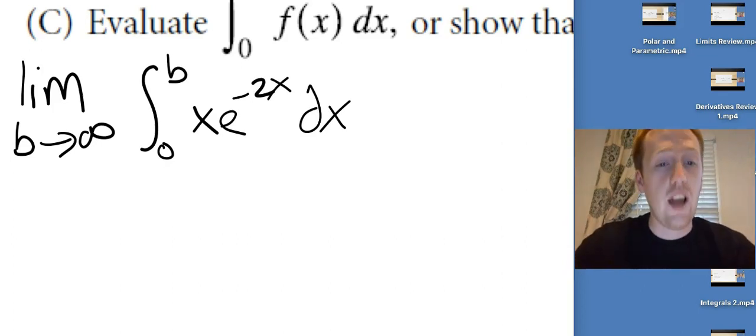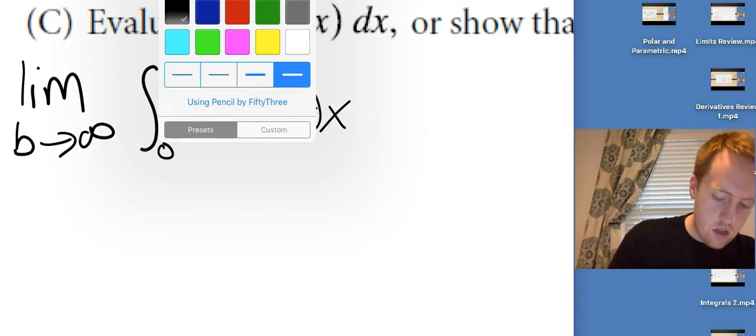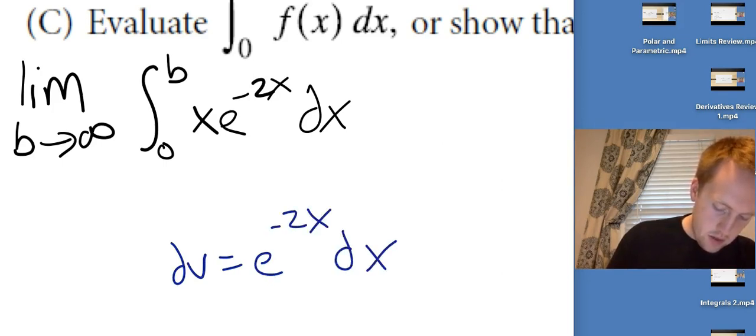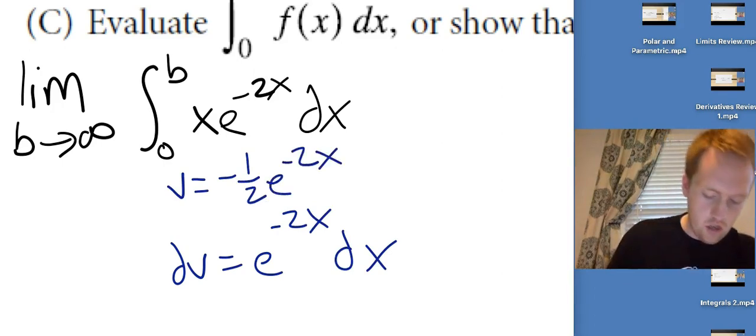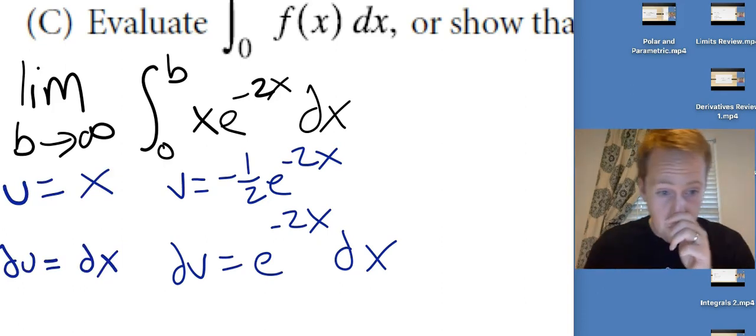Okay, now this integral, I'm going to have to use integration by parts. I'm going to let dv be e^(-2x) dx, which makes v = -1/2*e^(-2x). Just did a quick integration. And then u is going to be x, so du is going to be dx.